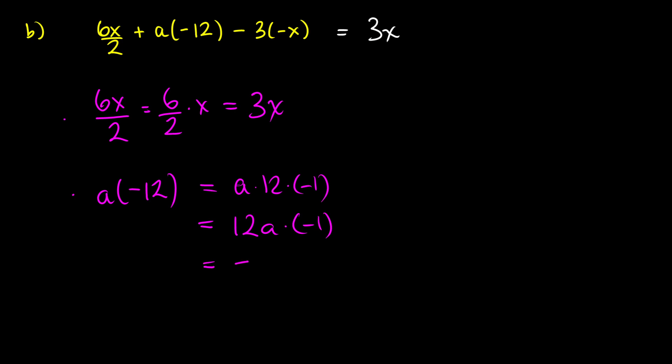Which will give us negative 12a. So that's as much as we can simplify that. So we're going to do 3x. To keep this simple, we're going to add negative 12a, and at the end I'm going to switch this to a negation sign.